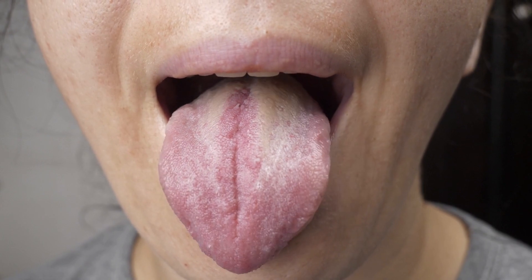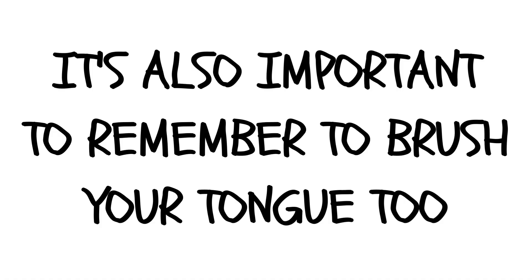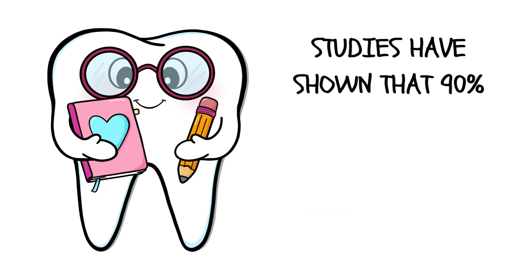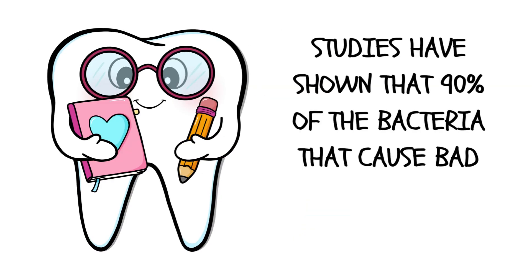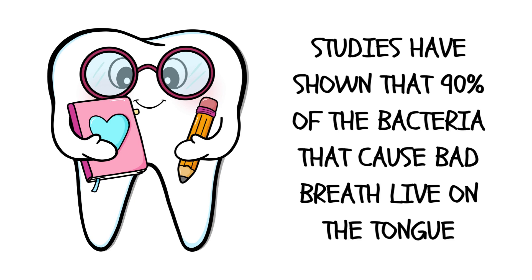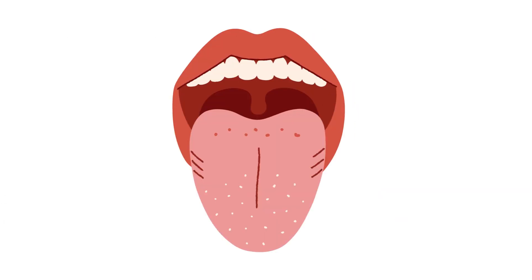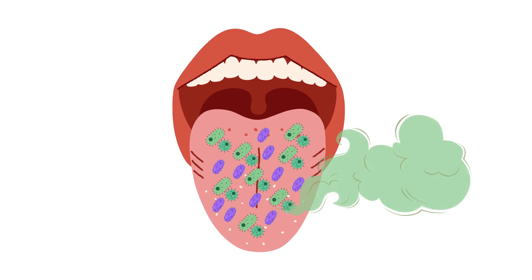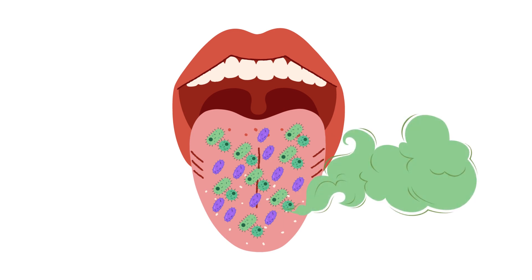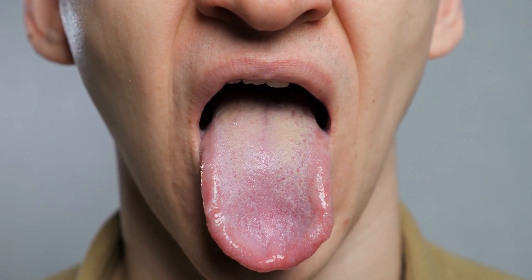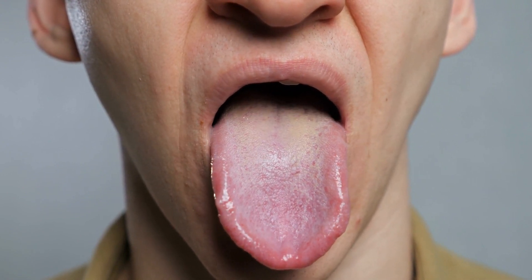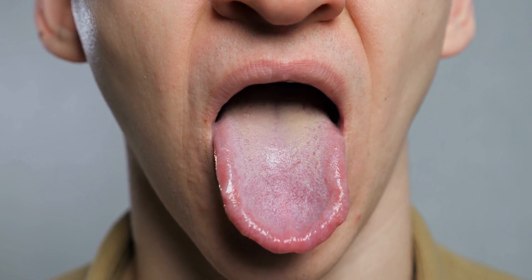The most important part that people leave out is tongue hygiene. It's also important to remember to brush your tongue too. Studies have shown that 90% of the bacteria that cause bad breath live on the tongue. If the tongue is not cleaned properly, bacteria can accumulate on its surface and produce gases that lead to halitosis. The bacteria can also cause a white or yellow coating on the tongue, which can be unsightly and contribute to the problem.